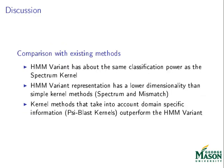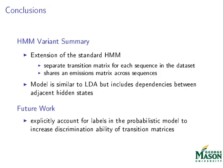To summarize, the HMM variant is a model that allows us to represent a set of variable-length sequences as a set of fixed-length vectors by combining ideas from the standard hidden Markov model and from topic models like latent Dirichlet allocation. In future work, we hope to account explicitly for labels in our model, and hopefully this will produce a representation that allows us to better discriminate between sequences. We include a list of references; for a more in-depth look at our ideas, please see our paper in the IJCAI 2011 conference proceedings.